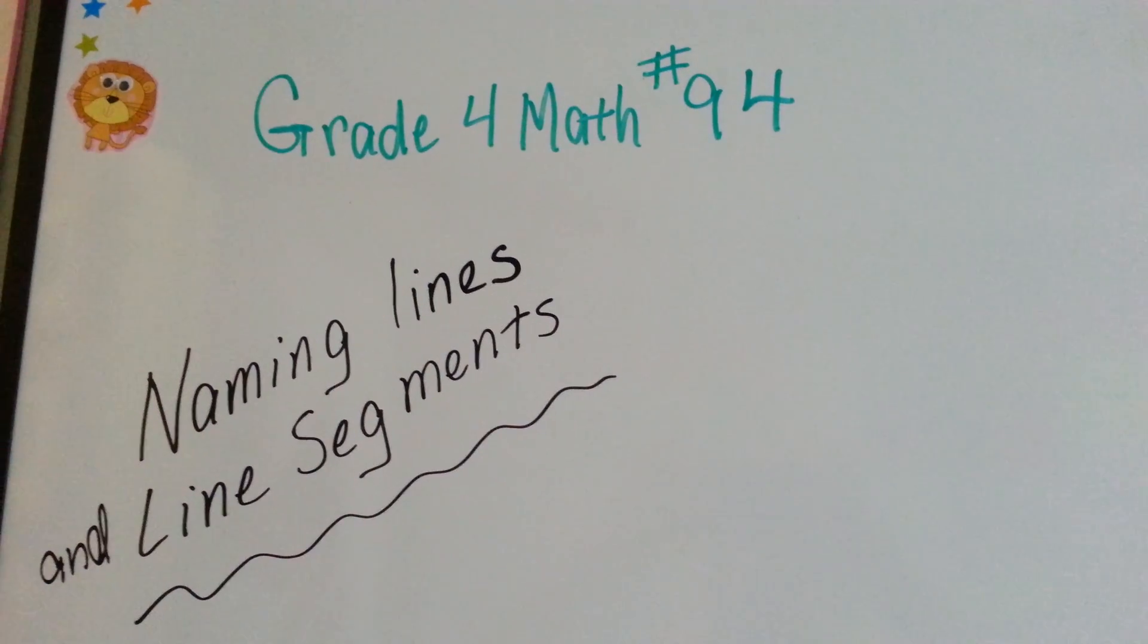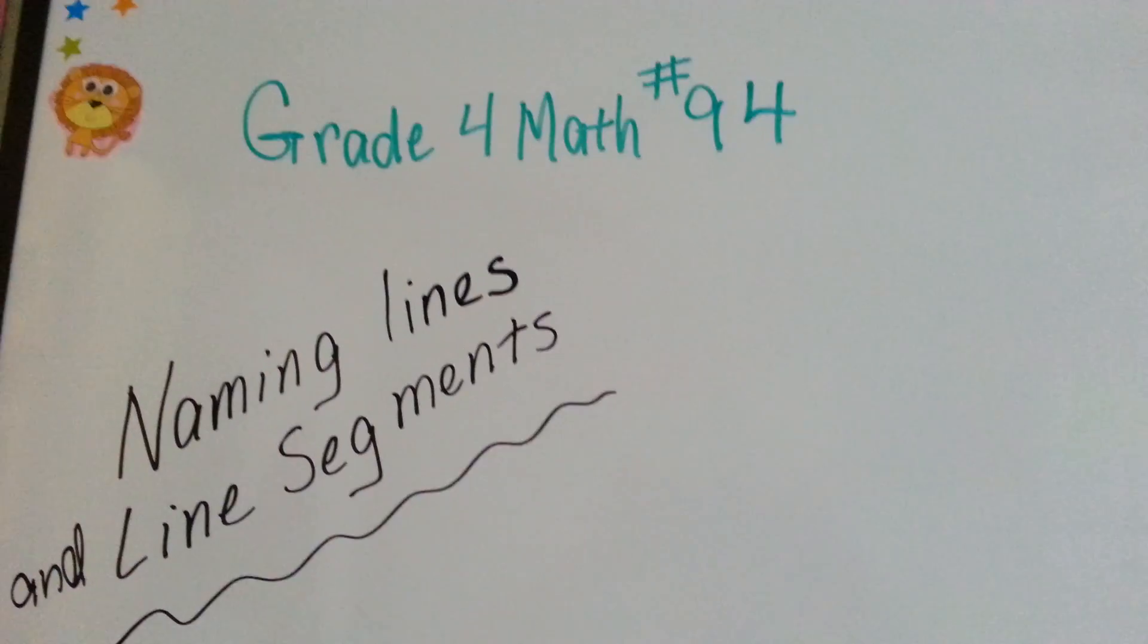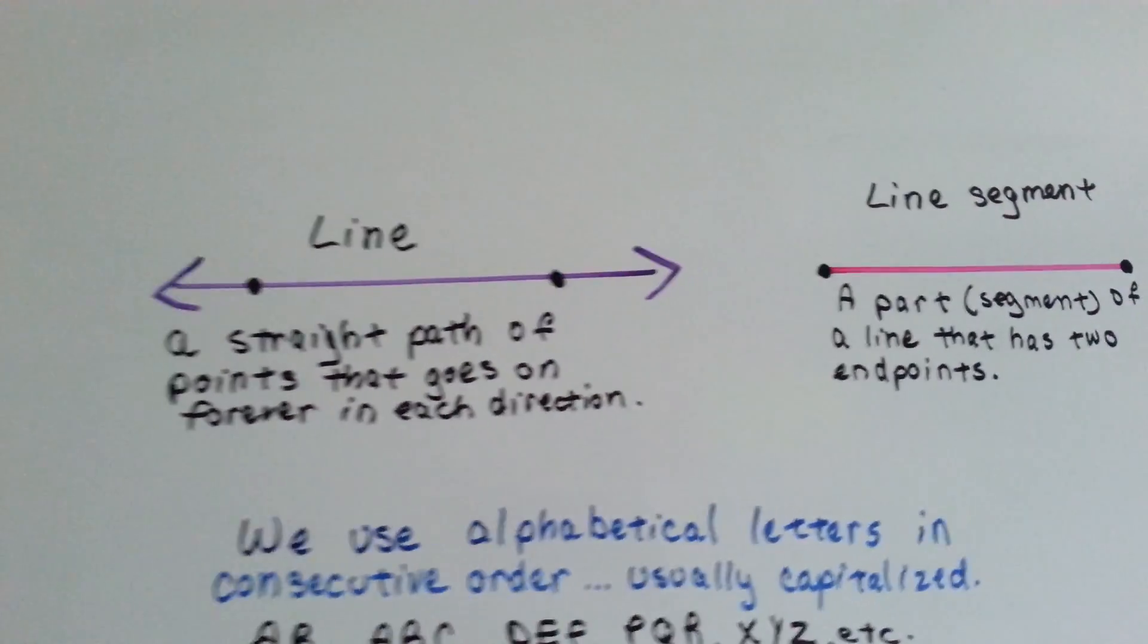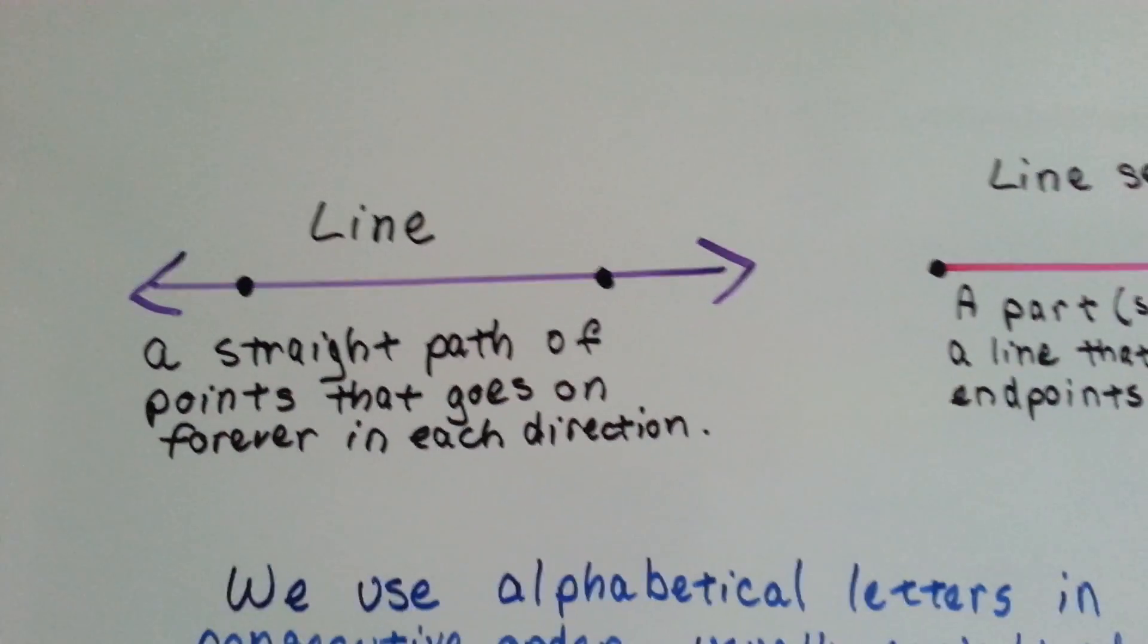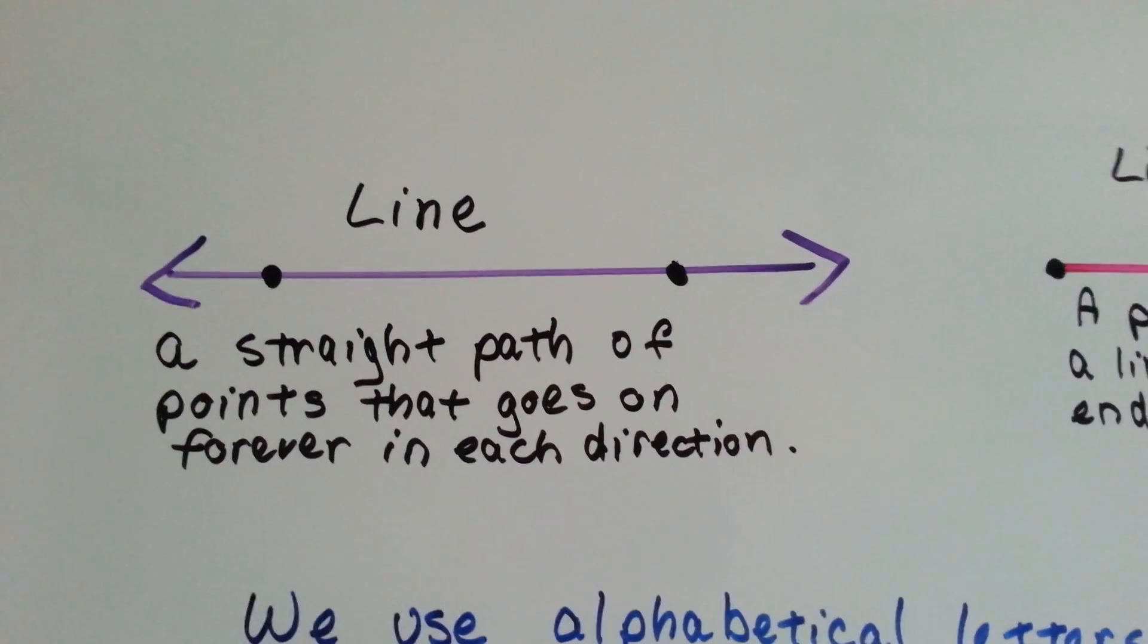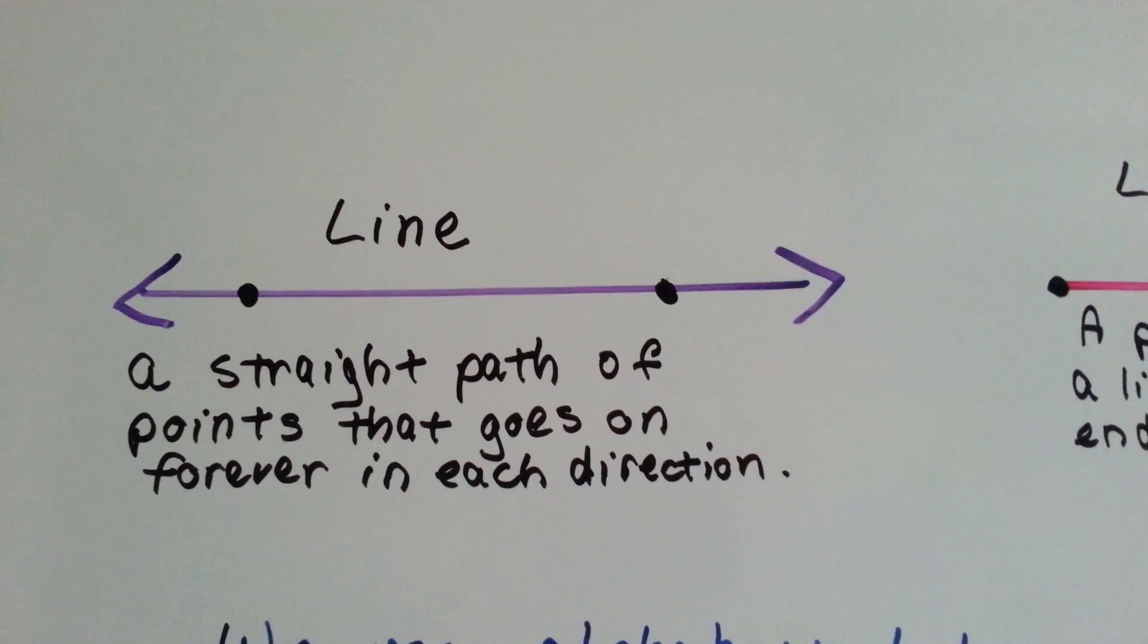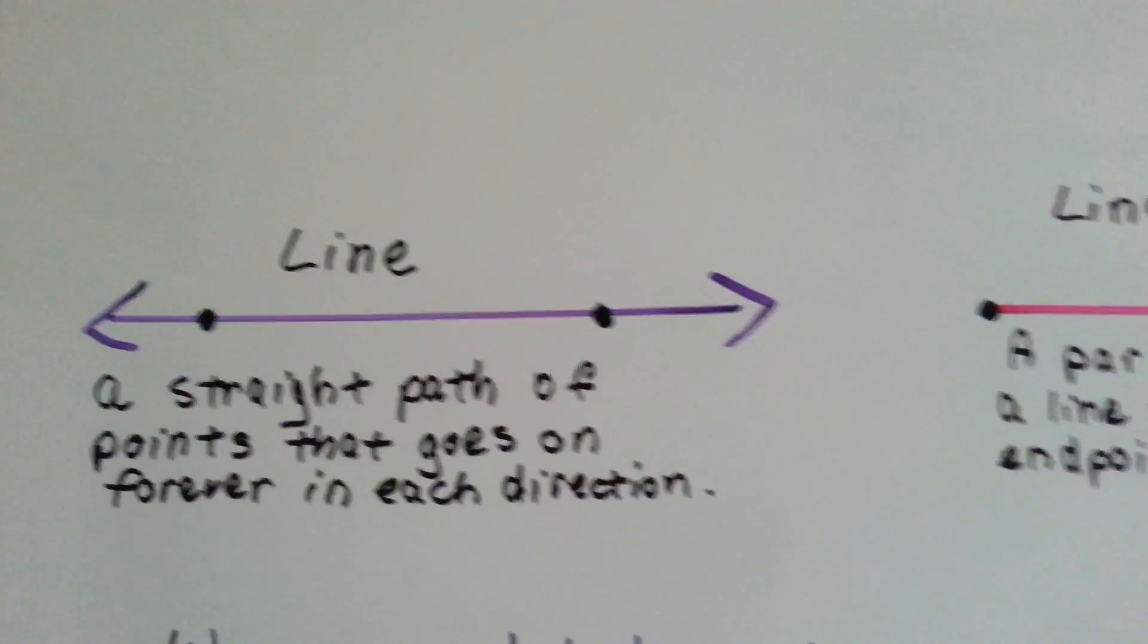Grade 4 math number 94, naming lines and line segments. We have to name them, otherwise we wouldn't be able to figure out what they are or which ones they are. A line is a straight path of points that goes on forever in each direction. See how it has two arrow points going in each direction? It goes on and on.